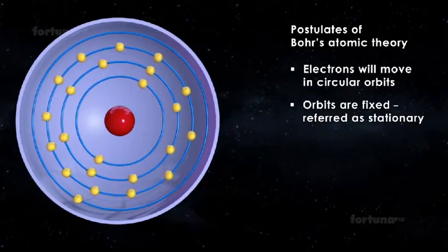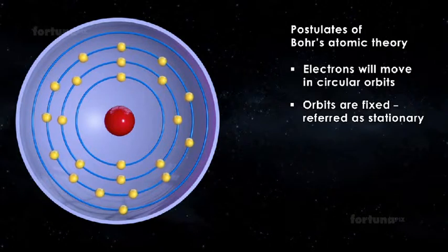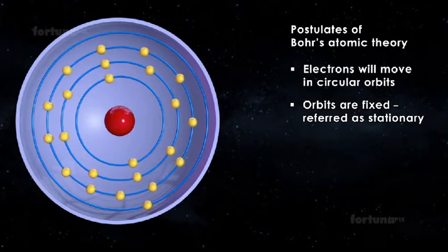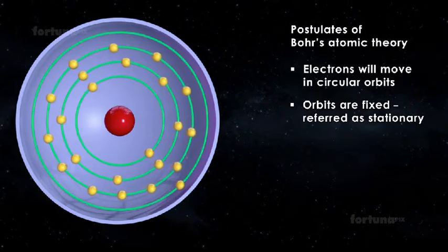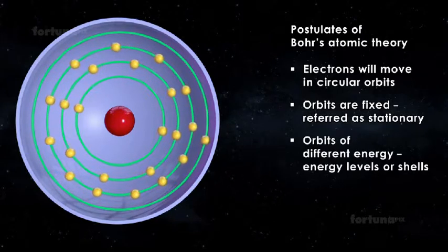The orbits are fixed and referred to as stationary, having electrons that orbit without radiating any energy. Bohr described these orbits of different energy as energy levels or shells.